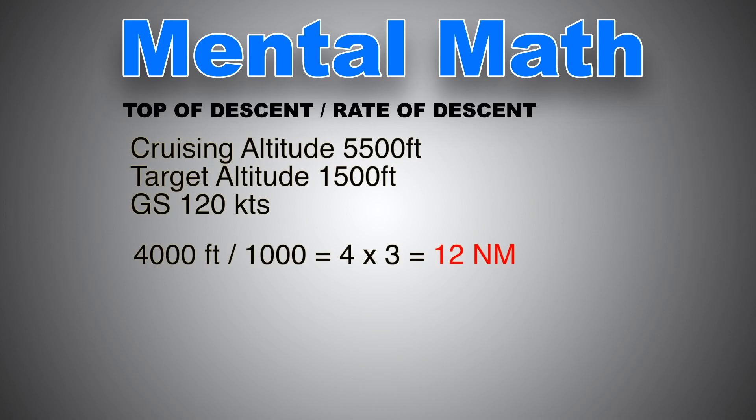Like I said, you may need to add a couple of nautical miles. So let's say, for example, 14 nautical miles away from the airport, I will start out my descent. Now, what is my rate of descent? The rate of descent will be the ground speed times 5. So 120 times 5 is 600 feet per minute.